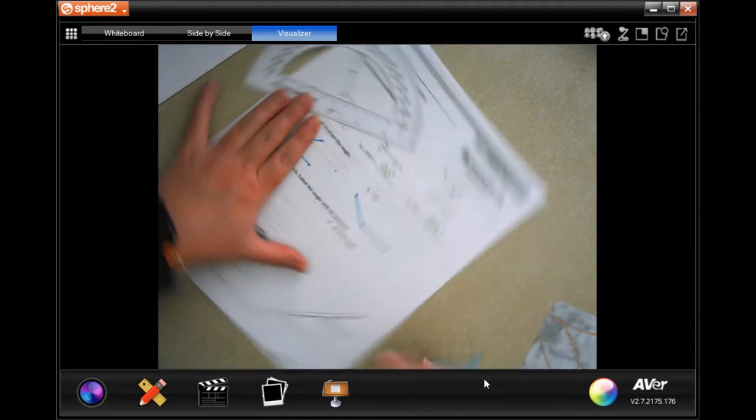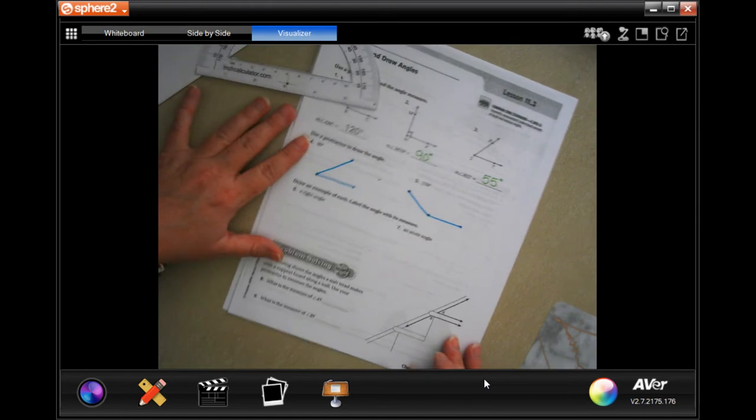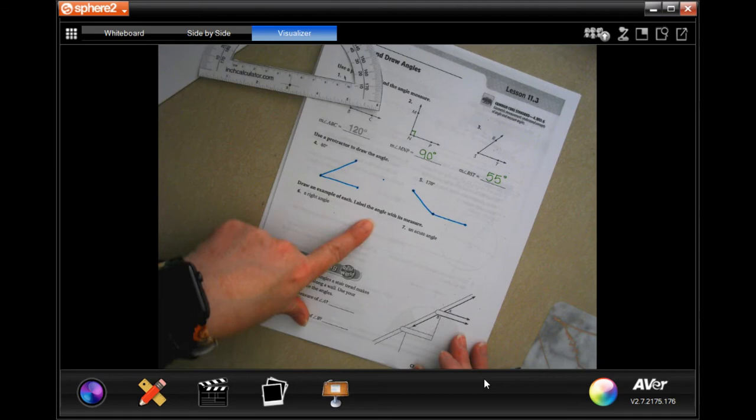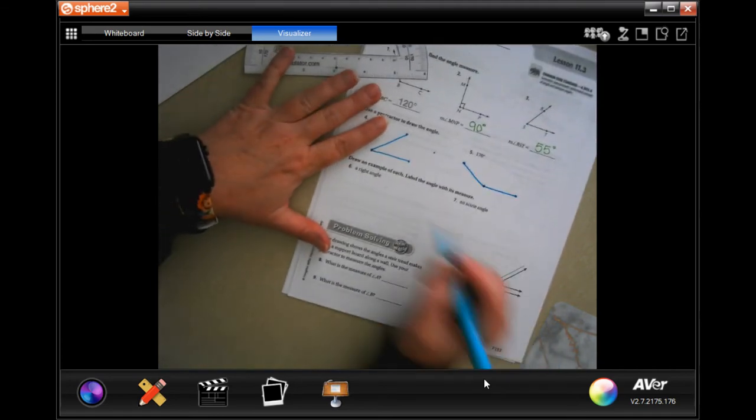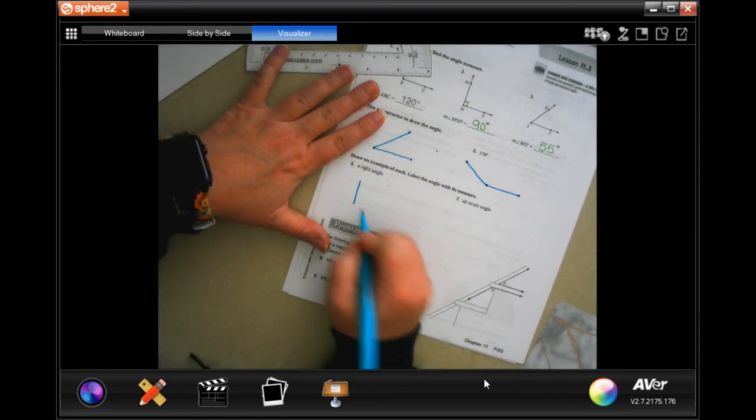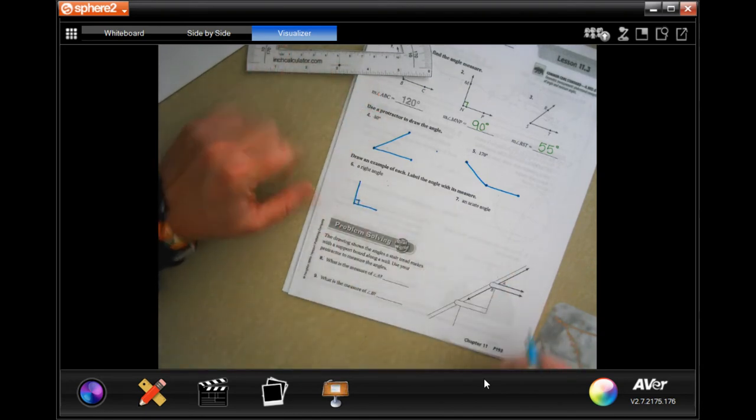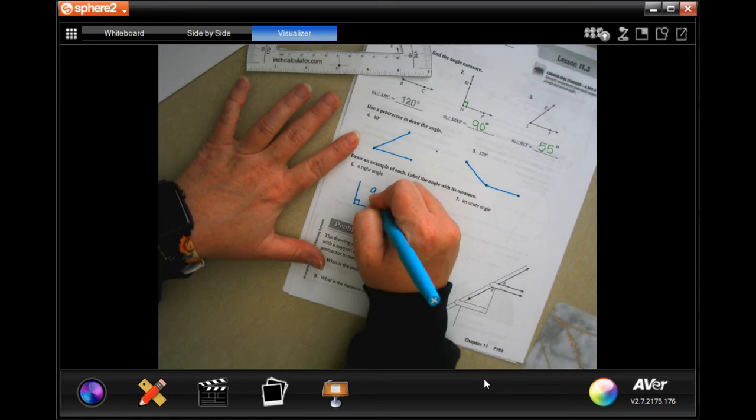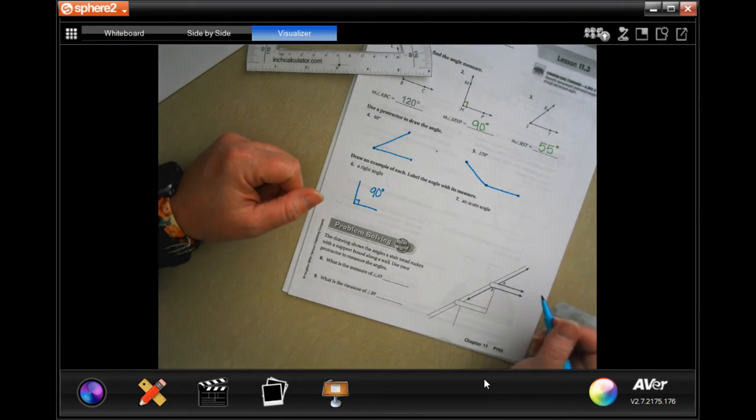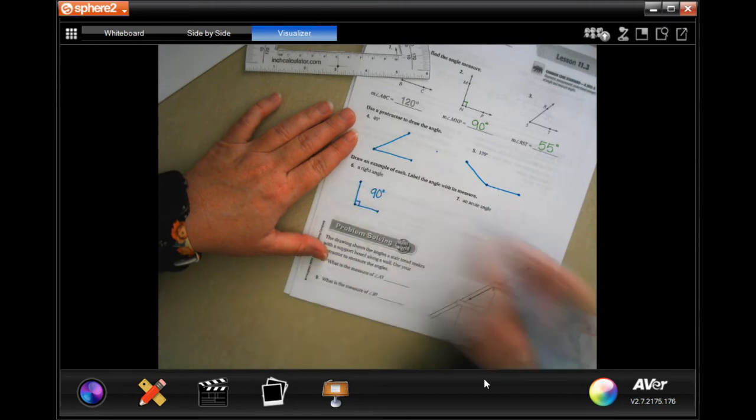So now we're gonna draw an example of each and label the angle with its measure. So a right angle, well a right angle is just an L. That's a right angle. And the right angle is 90 degrees. Done. We're gonna go ahead and put our dots in though just so that we've got them.